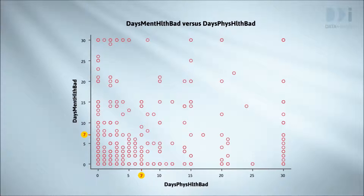The worst case here is the 0,0 position — zero bad mental health days and zero bad physical health days. In fact, there are 302 people sitting at the 0,0 position. That's 40% of them, but you'd never know it.